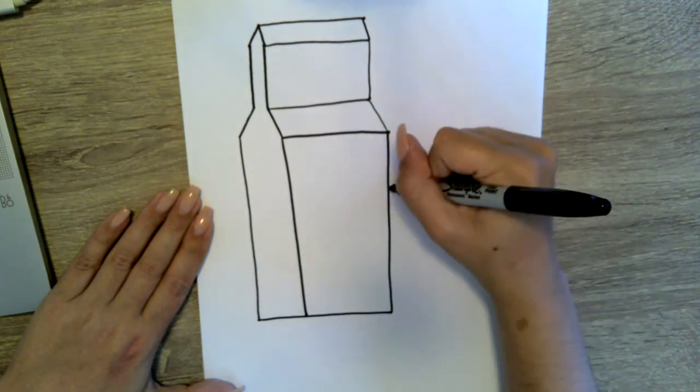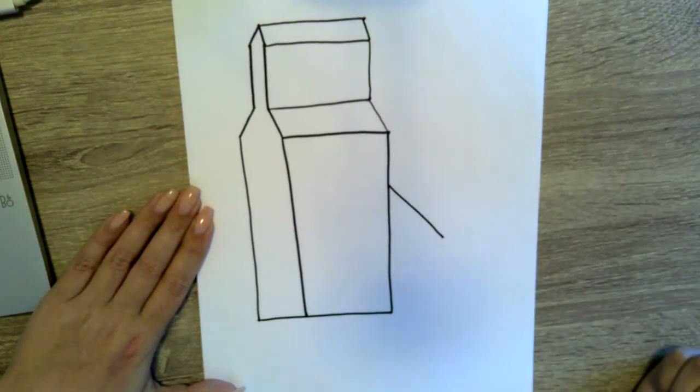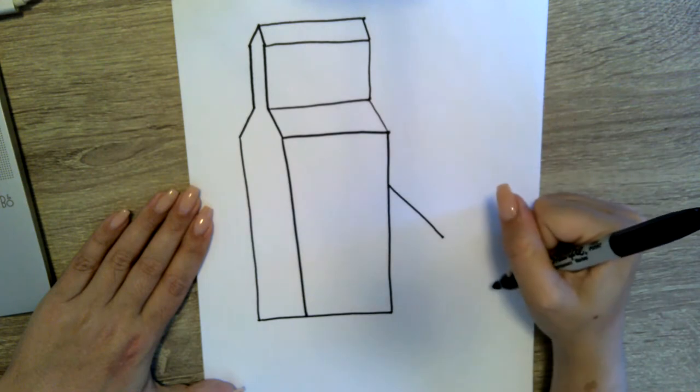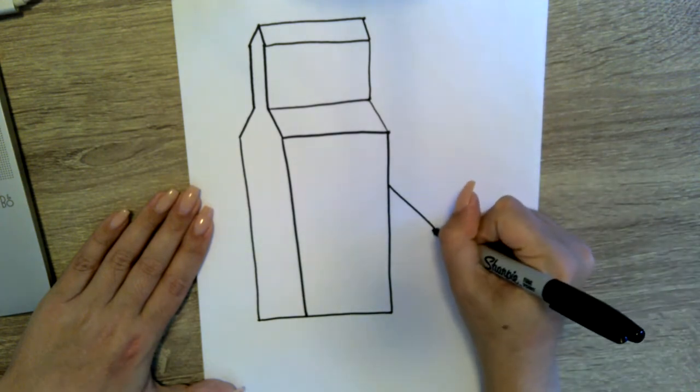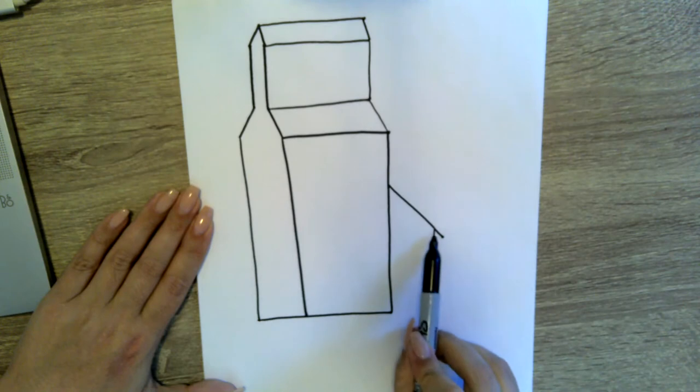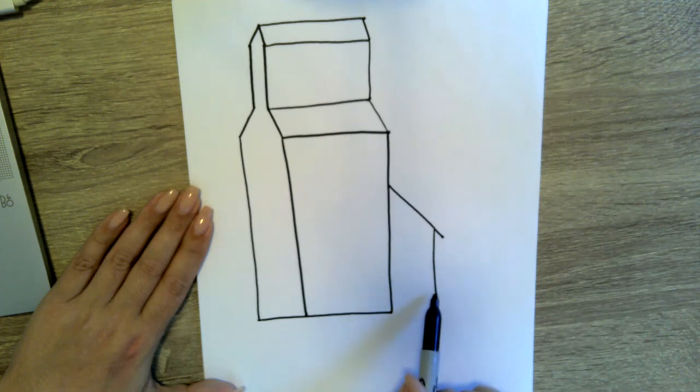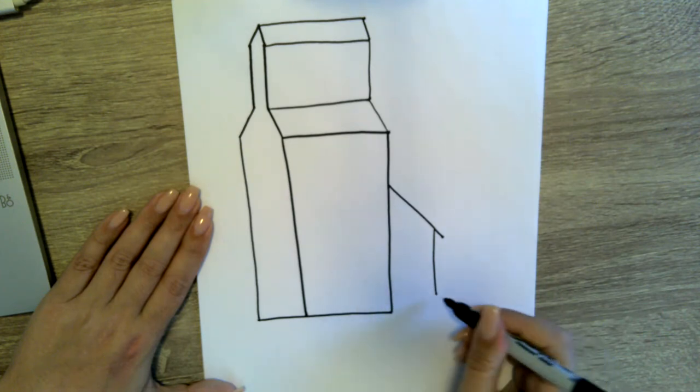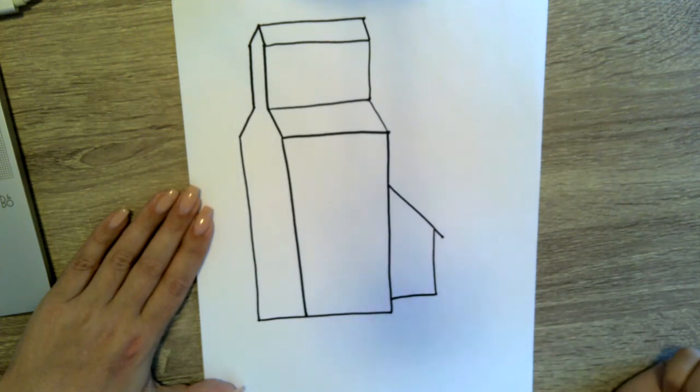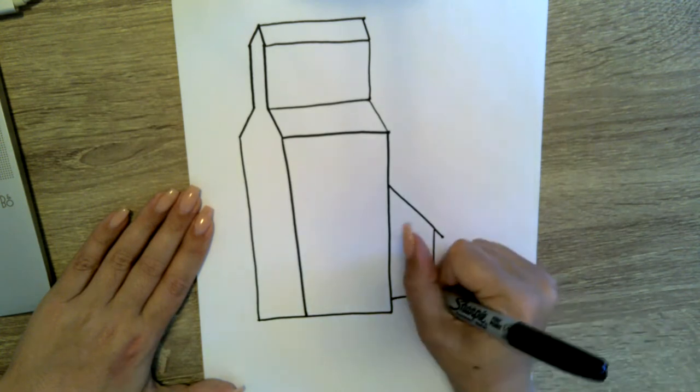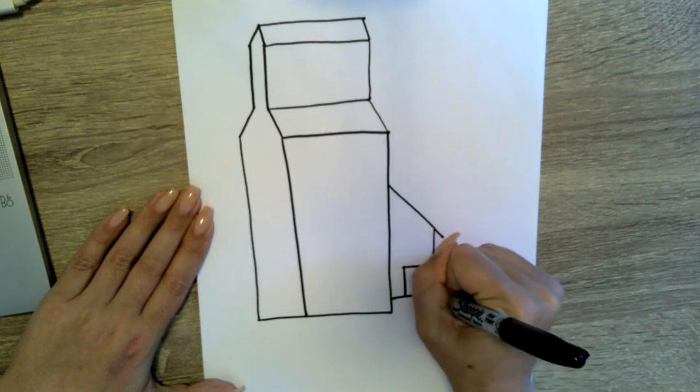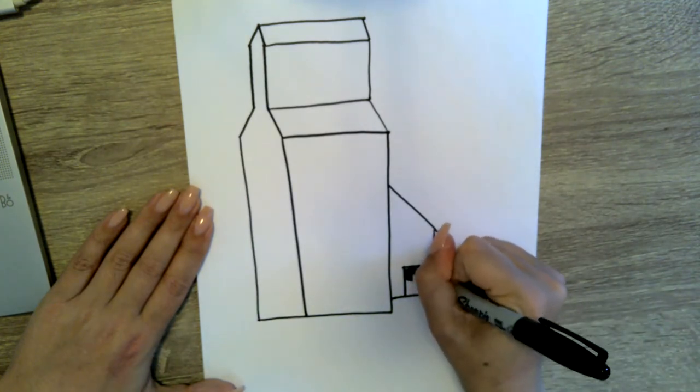We're going to go back to the side here and draw a little roof, which is just a diagonal line out. Then we're going to do a straight line down. I'm leaving a little bit of the roof overhanging the line and I'm not bringing my line down all the way. Then I'm going to connect it right into my elevator here. I'm going to draw a door and that can be colored in black.